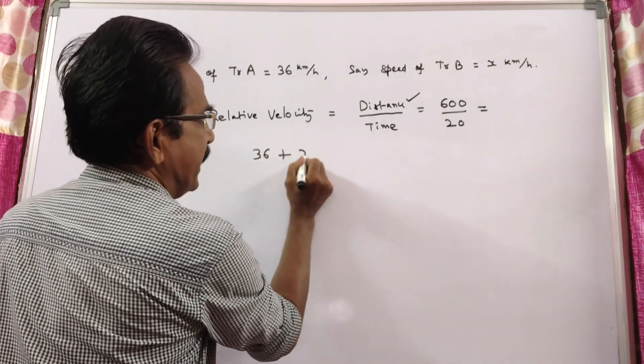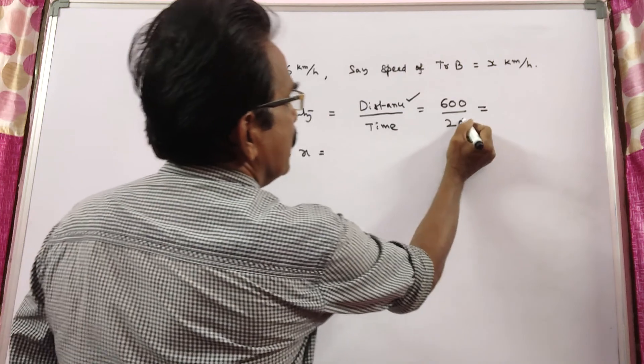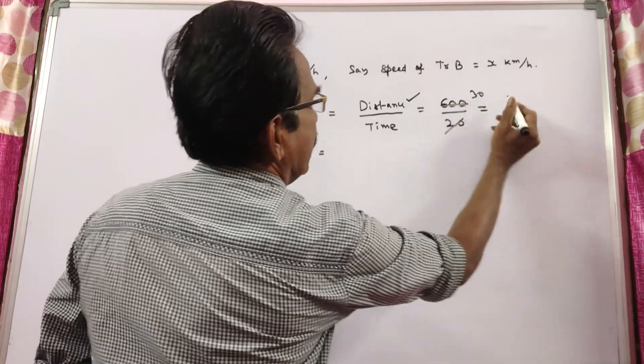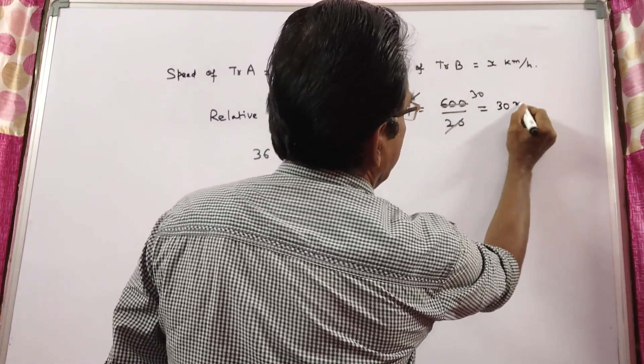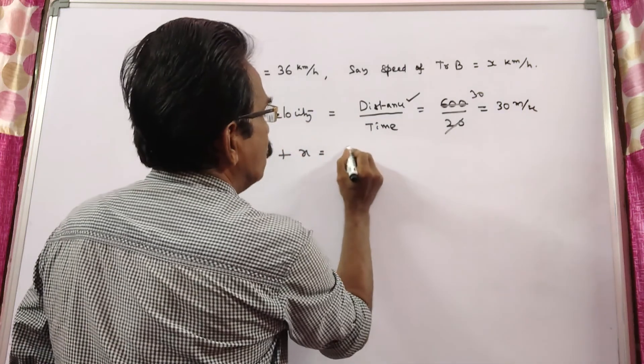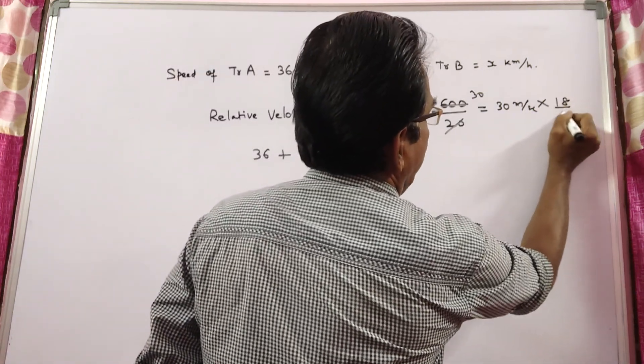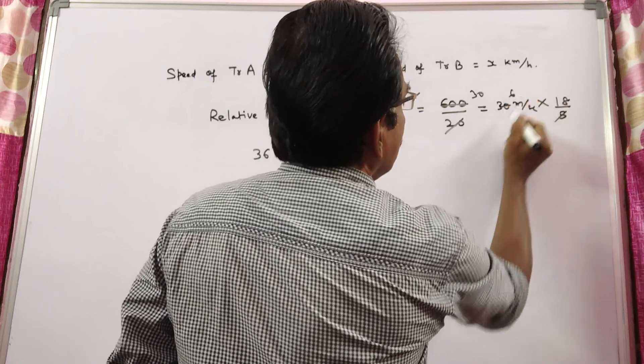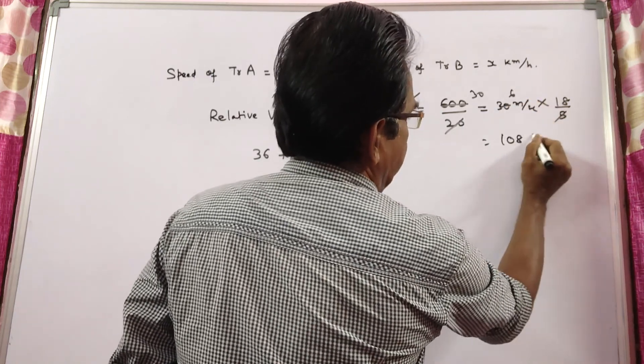So 36 plus x equals... 600 divided by 20 is 30 meters per second. Converting 30 meters per second to kmph, we get 108 kmph.